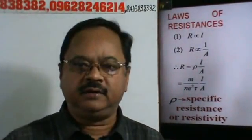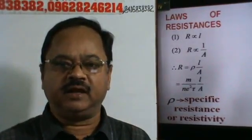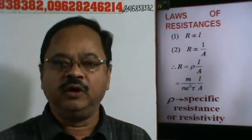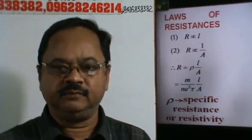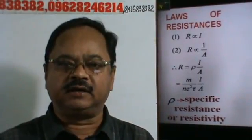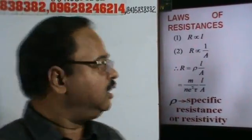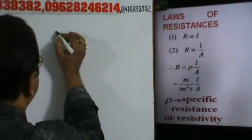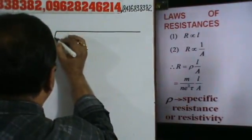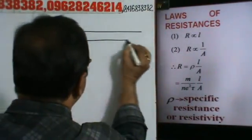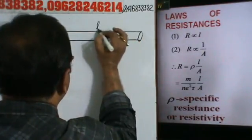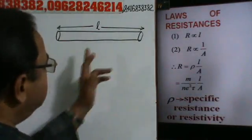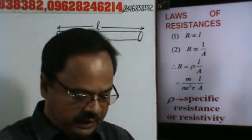Number one: you can write the resistance of a conductor. The resistance of a conductor is directly proportional to the length of a conductor. We can write R is proportional to L. Suppose this is a conductor whose length is L, then we can say that resistance of this conductor is directly proportional to its length.